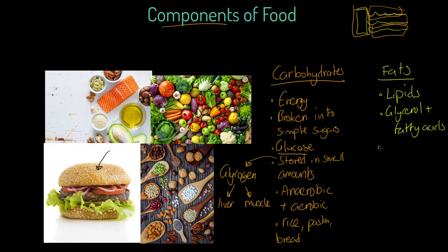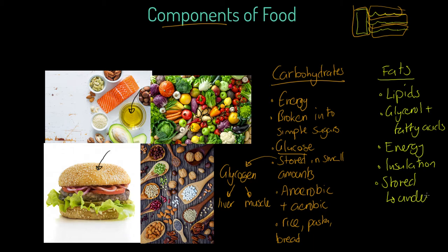We can use fats for energy — fat is a form of energy in the body, so for example vegetable oil can be used for energy. Fat is also used for insulation, so it aids thermal regulation and body heat control. Fat can be stored, and generally it is stored under the skin — subcutaneous fat. Fats are typically used for aerobic respiration.